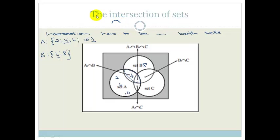In the intersection, we represent with what looks like an N. So, remember, union has got a U, and intersection has what looks like an N, or an upside-down U.